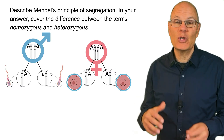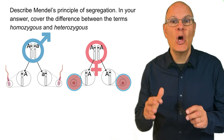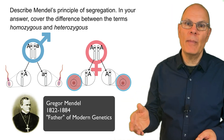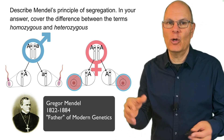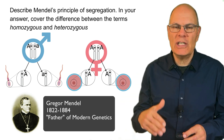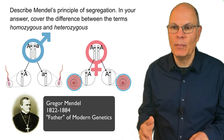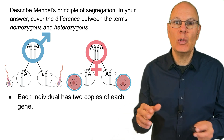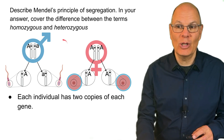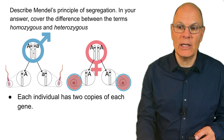Describe Mendel's principle of segregation. Cover the difference between the terms homozygous and heterozygous. Gregor Mendel is considered the father of genetics — in the 1800s he figured out many of these basic principles. Every individual has two copies of each gene, located on chromosomes organized into homologous pairs.